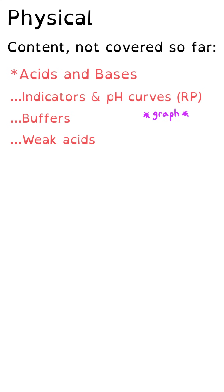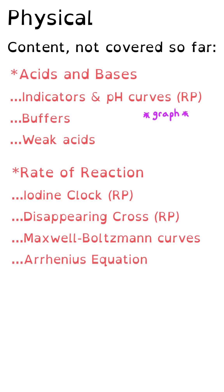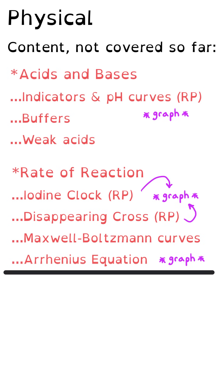My second big tip for physical chemistry is the rates of reaction topic. There's been some content already, but nothing about the iodine clock required practical or the disappearing cross required practical. Either of those could link in with Maxwell-Boltzmann curves, and both could involve plotting a graph. We haven't had anything about the Arrhenius equation either — that could be a calculation or a graph-plotting exercise. Those are my big two tips for physical chemistry.